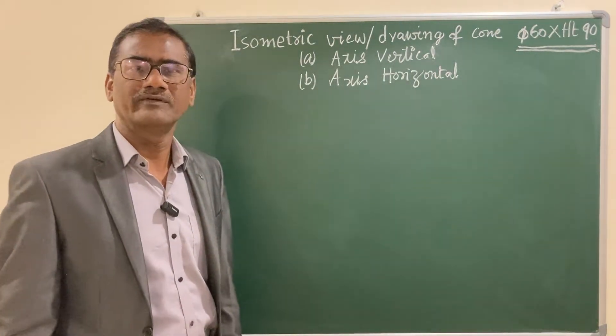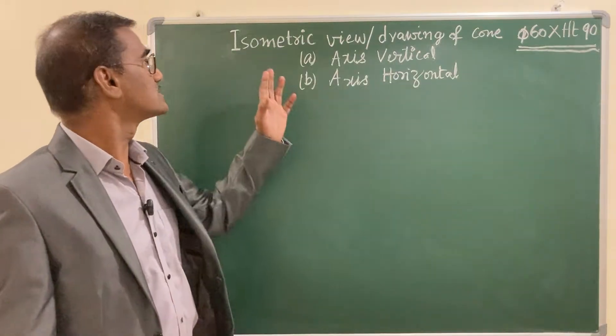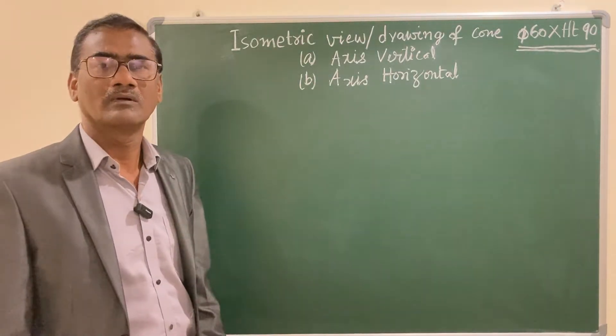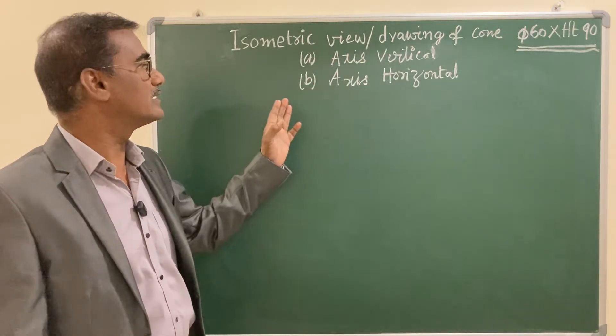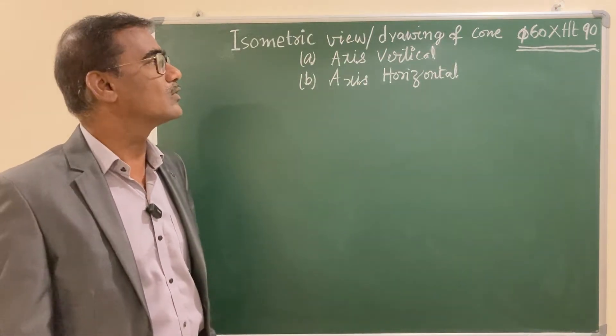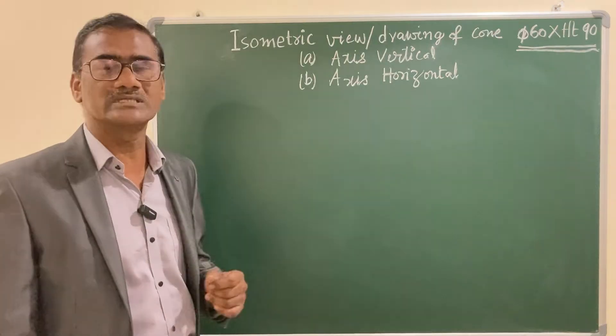Hello everyone, I am Ravi, professor of mechanical engineering. Today's topic is isometric view of a cone with different orientations: keeping axis vertical and axis horizontal. Let us consider the dimensions of the cone—base diameter is 60 mm and height of the cone is 90 mm.